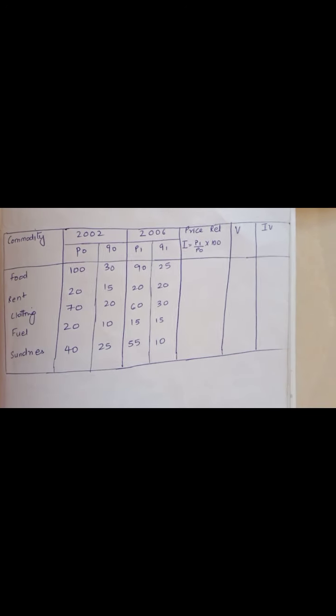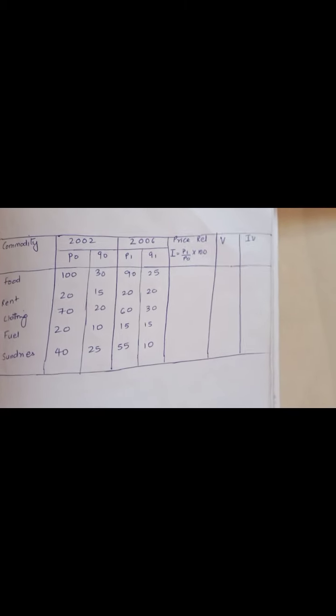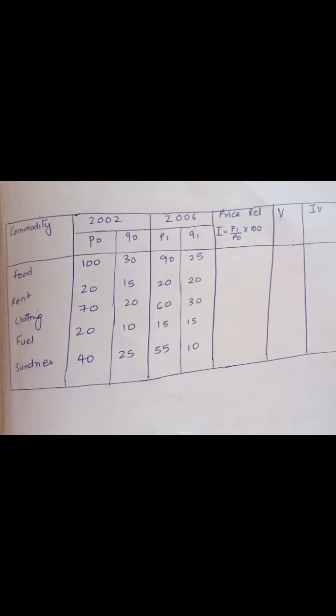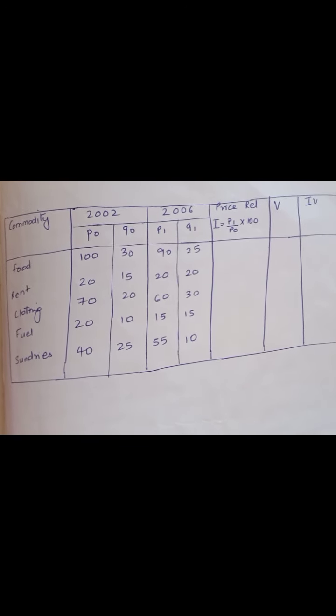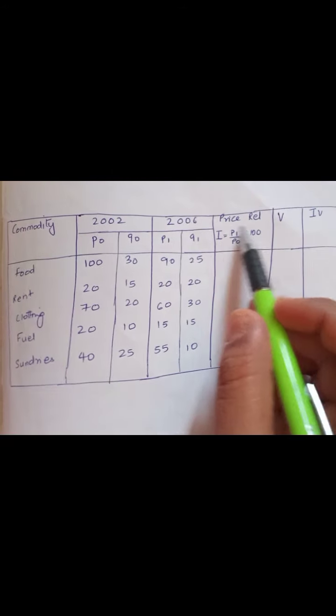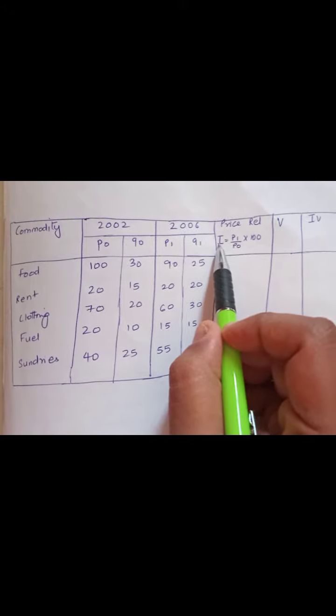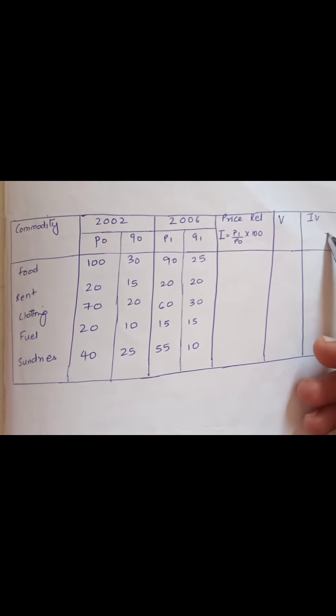I have wrote down into my tabular form. Here commodities: food, rent, clothing, fuel, and sundries. Price and quantities I have listed accordingly for 2002 and 2006. For finding the average method or for weighted average relative, you need to first understand how to find the price relative. You have to find i, then we are going to find the value, then basically we are going to product them up.